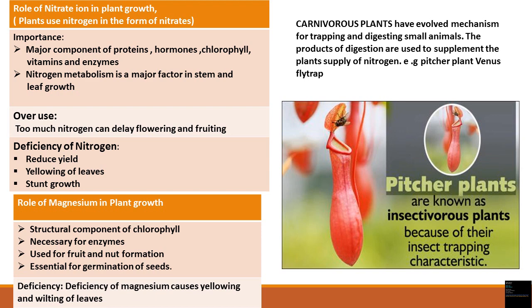Some bacteria live in the roots of certain plants like soybean and legumes. These bacteria have the ability to fix atmospheric nitrogen for the plants, converting it into nitrates. In return, they get shelter and food from the plant. This type of relationship is known as symbiosis. These bacteria usually live in the roots of plants like soybean and legumes.